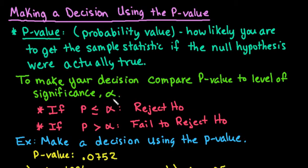In order to make the decision it's really important that you first know what a p-value is. The p-value stands for the probability value. Basically what this is telling you is how likely you are to get the sample statistic that you got if the null hypothesis were actually true. So it's just telling you how likely it is that that sample would occur just by chance alone.